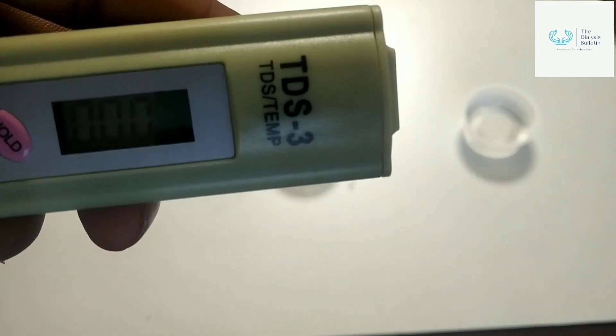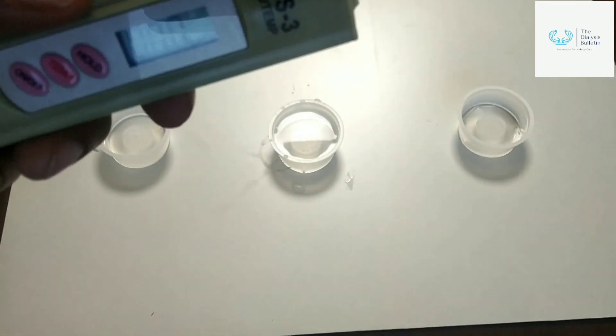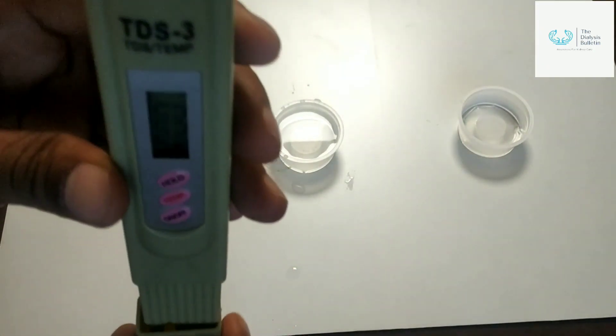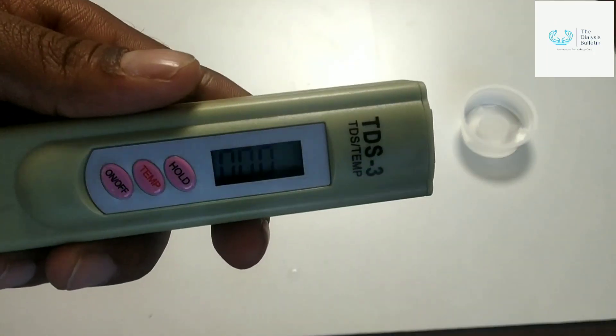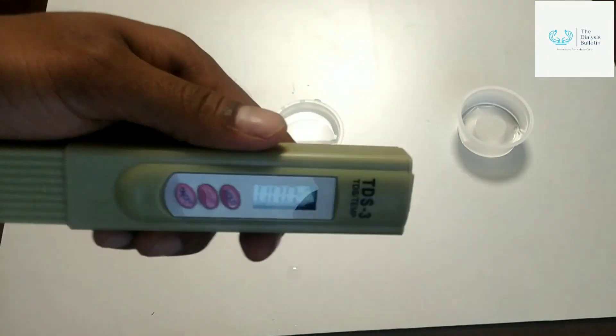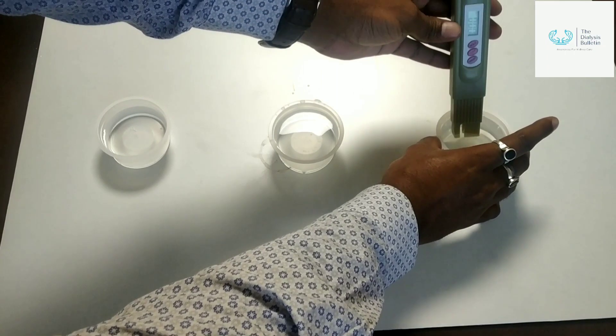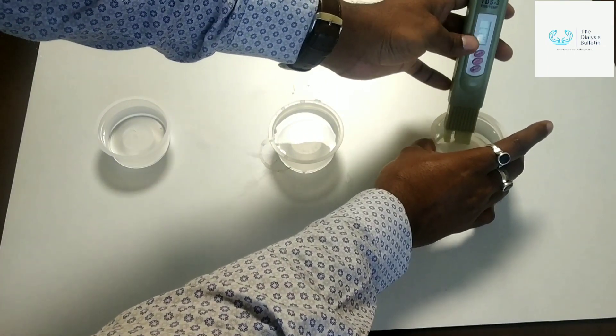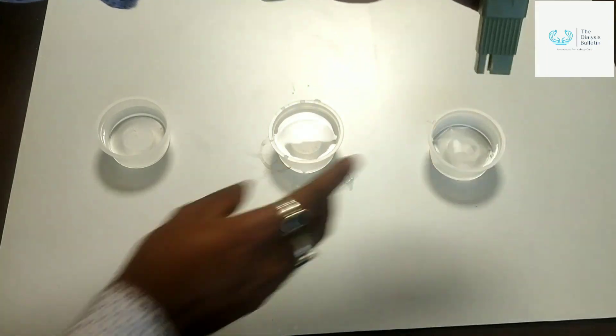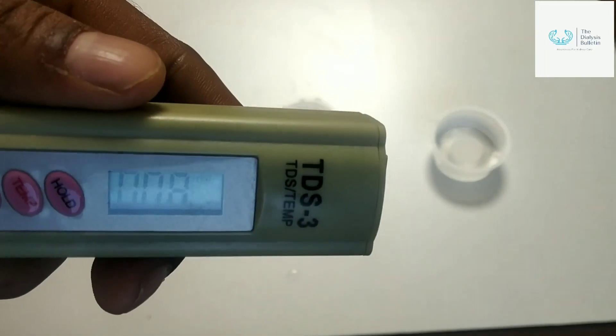If you're not getting zero or the neutral value, you have to clean with distilled water or RO water, then you will get the zero value. Now I am going to check the RO water. It's now 8 PPM.